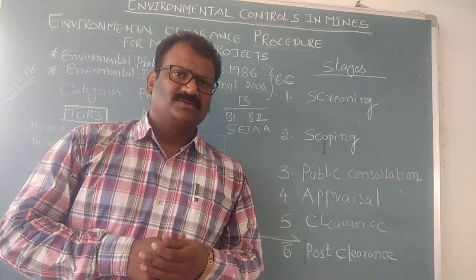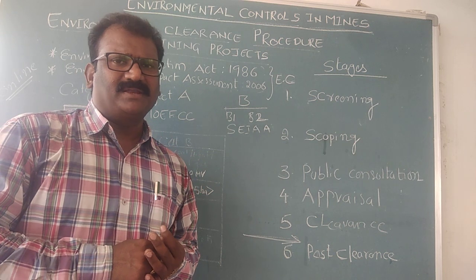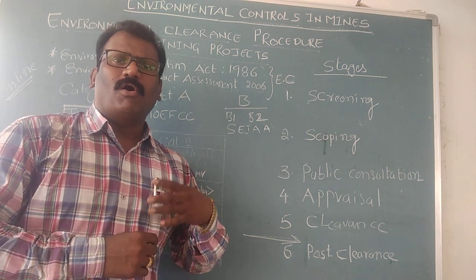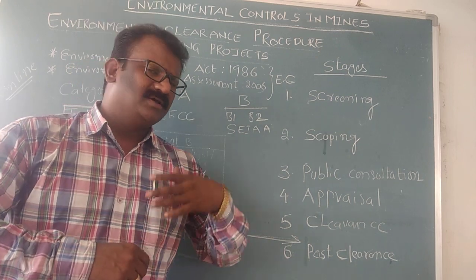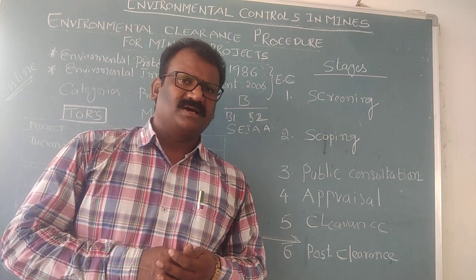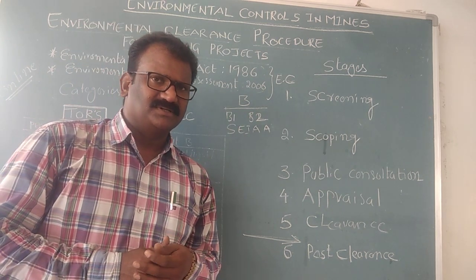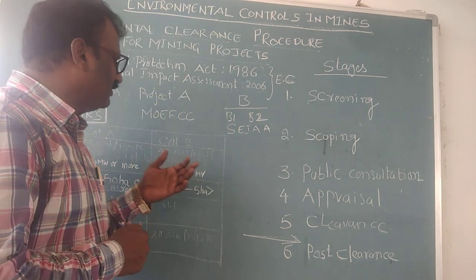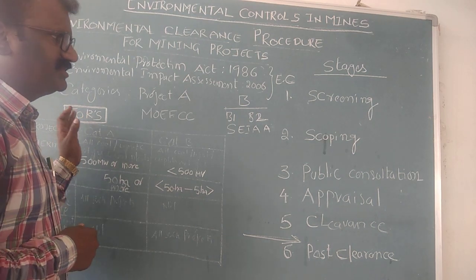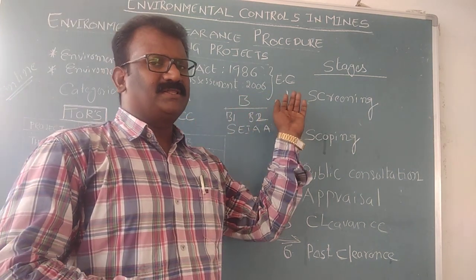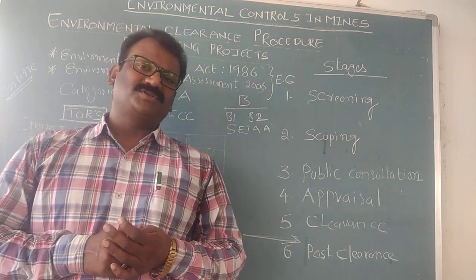As per the EIA Notification 2006, the project proponent has to prepare and submit documents through the online portal, where they are given a registered login ID. They submit to the environmental clearance portal using Terms of Reference (TOR) documents. In the screening process, projects are categorized as either Category A or Category B.